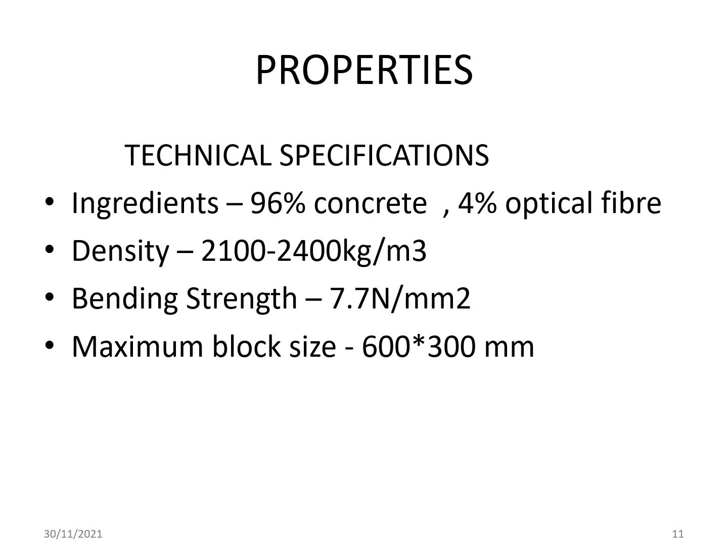Technical Specifications: Ingredients are 96% concrete and 4% optical fiber. Density should be 2100 to 2400 kg per cubic meter. Bending strength should be 7.7 N per mm². Maximum block size is 600 x 300 mm.